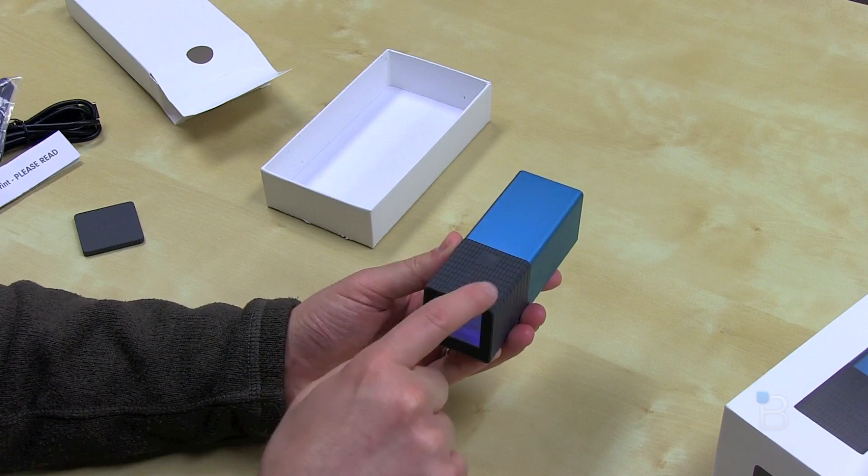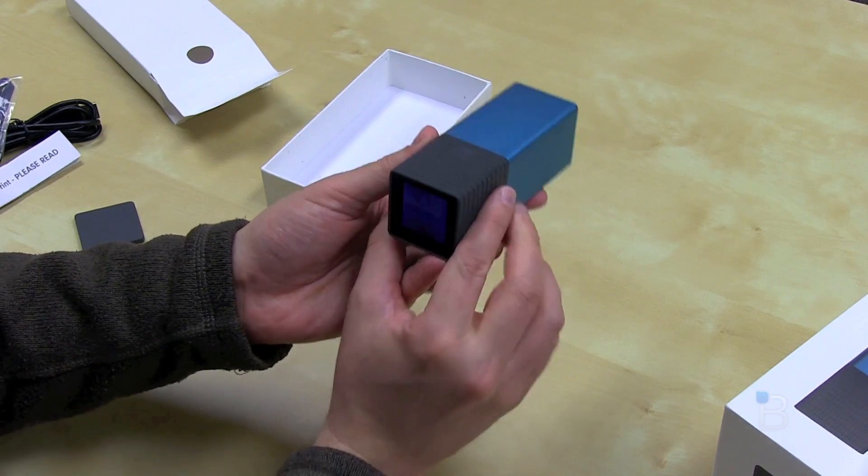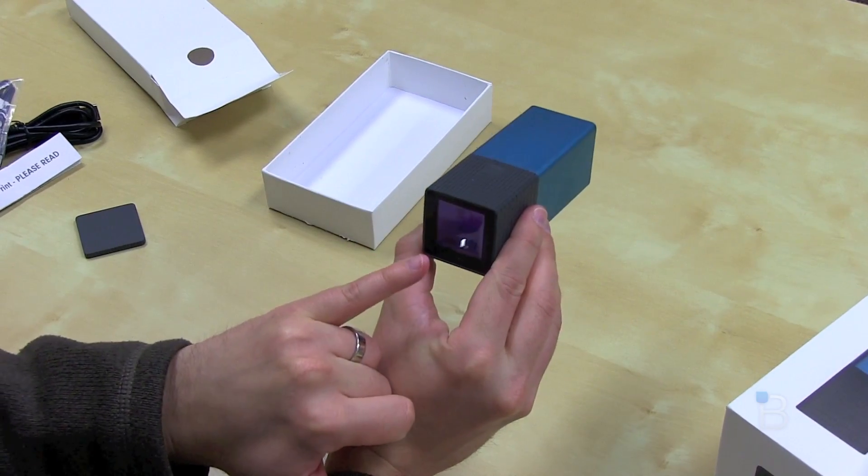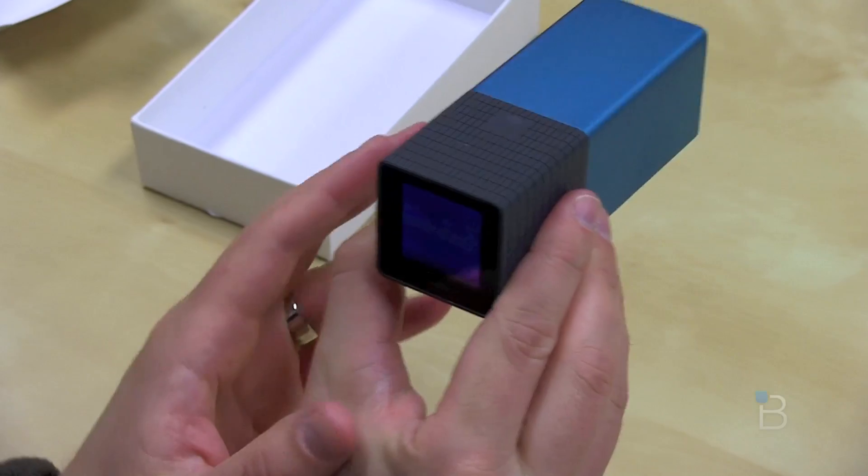If you want to zoom, you can actually just rub your finger across here and you can start zooming. When you want to take a picture, you're going to rely on that teeny tiny little optical viewfinder there to take your picture.